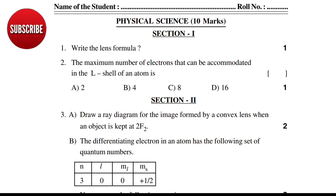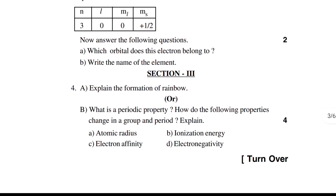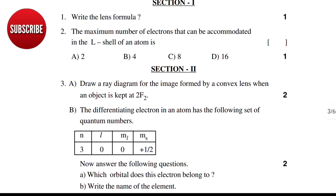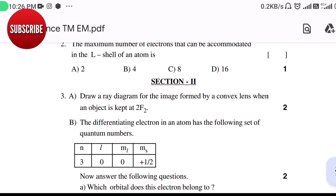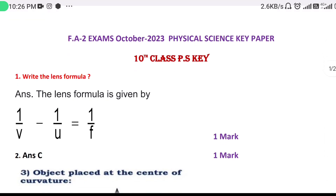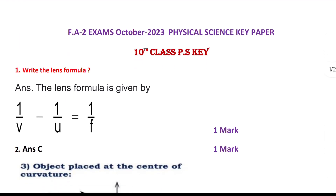When an object is kept at 2F, you can ask questions, check answers, and check notes — this may be very useful. Here is the FA2 exam October 2023 Physical Science key paper. Here is the answer to: write the lens formula.